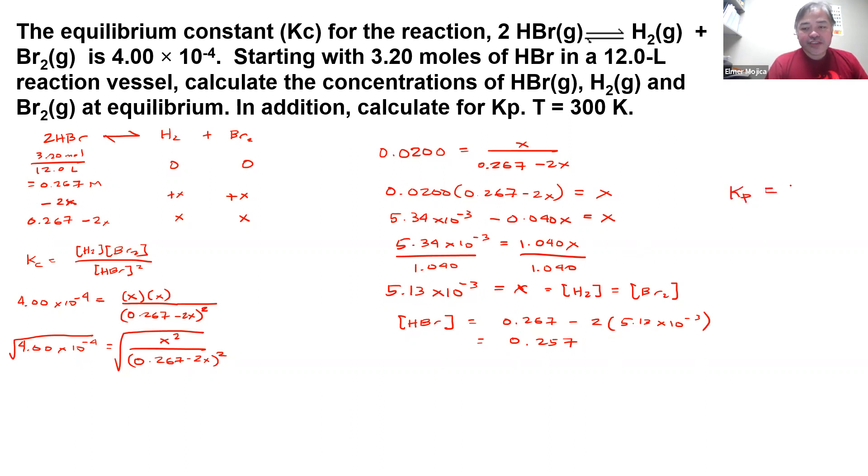In this case, that just equals Kc because they have the same number of species on both sides. If you remember, Kp equals Kc(RT)^ΔN. So ΔN here equals 0, so that is just equals to 1.